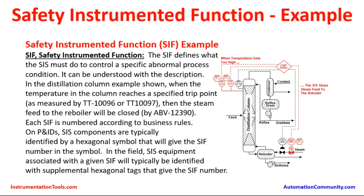The tag number of the instrument plus the SIF number of the particular system will be easily identified for the ease of the operation and maintenance team. This is very important for proper identification. Otherwise there could be a chance of error — instead of attending to TT10096, people may go and attend TT10046, which is also identical and in the same location. If the tagging philosophy is not properly maintained, there could be a chance of error by attending to the wrong instrument. So the tagging philosophy and SIF identification must be maintained in the field for error-free maintenance.